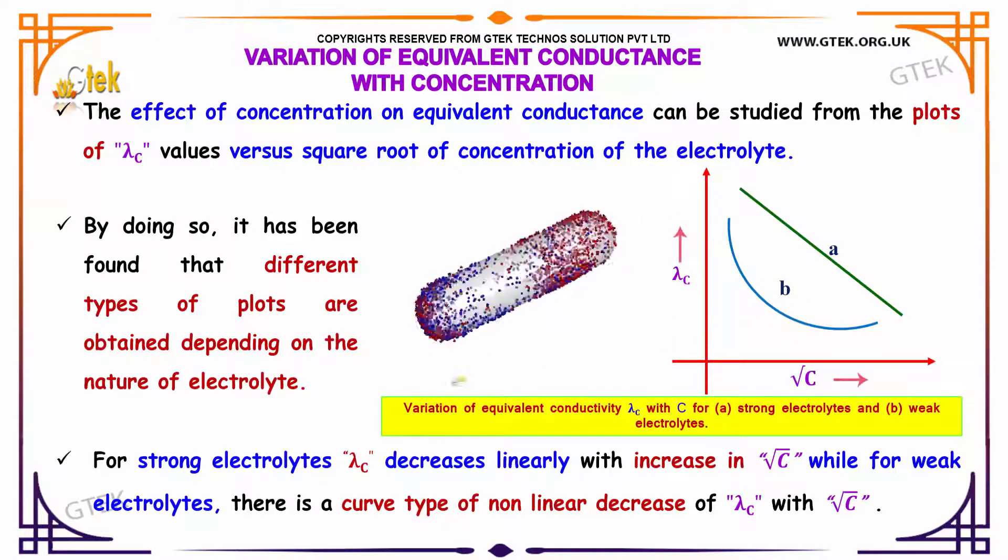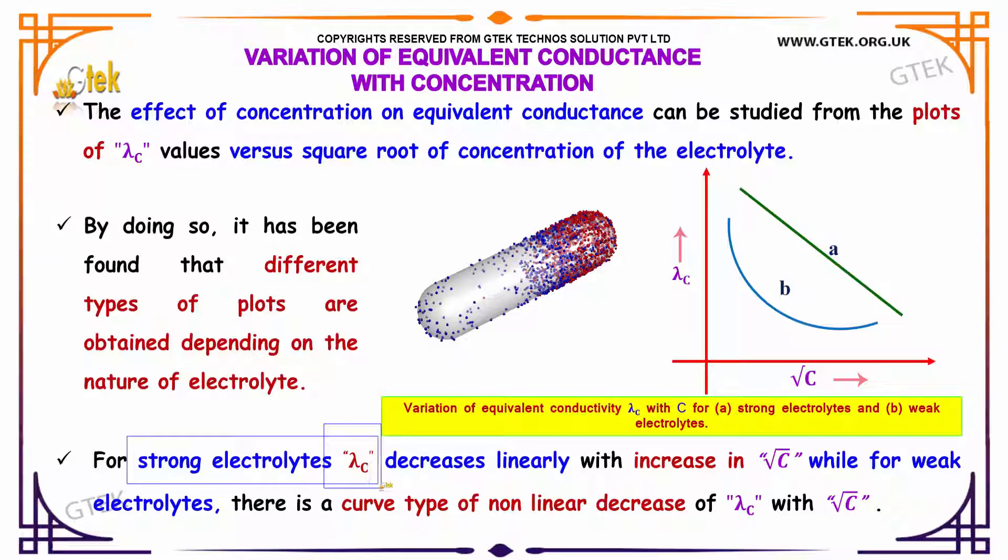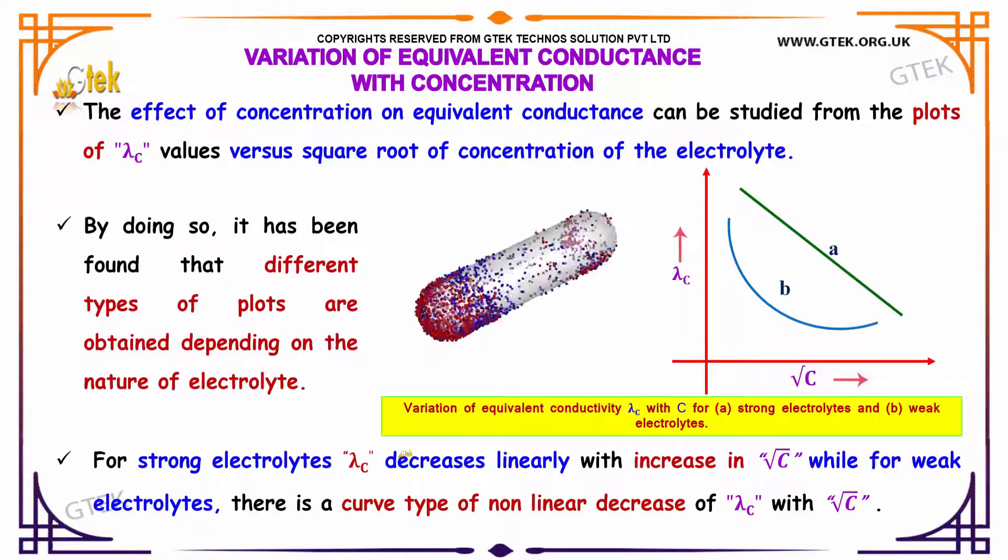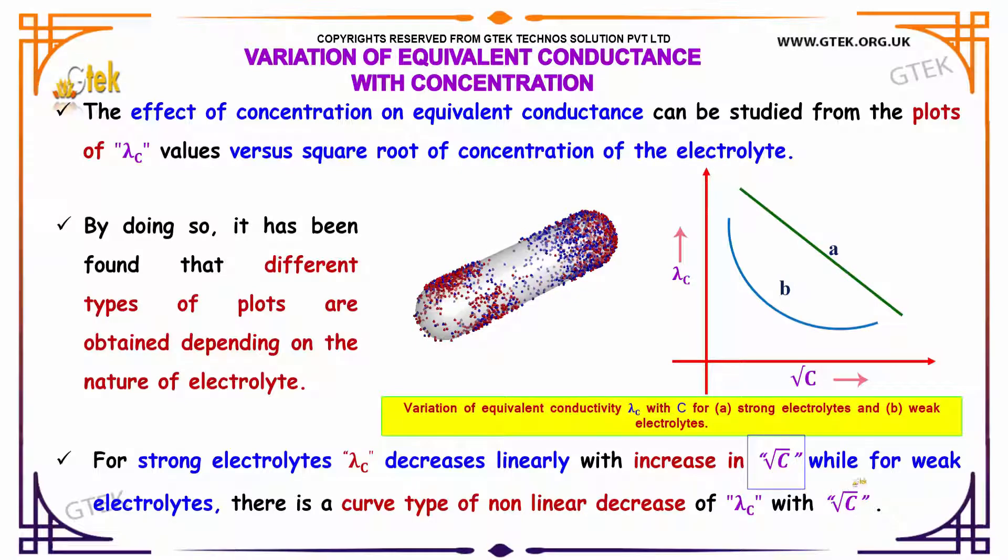For strong electrolytes, lambda c decreases linearly with increase in root c, while for weak electrolytes there is a curve type of non-linear decrease of lambda c with root c.